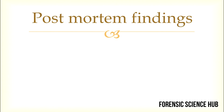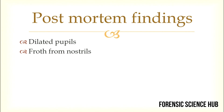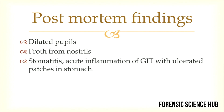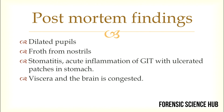Next, the post-mortem findings in a person who has undergone Calotropis procera poisoning: the pupils will be dilated and froth will be coming out from the nostrils. There can be stomatitis, acute inflammation in the gastrointestinal tract, and patches of ulcers in the stomach. The viscera and brain are congested.